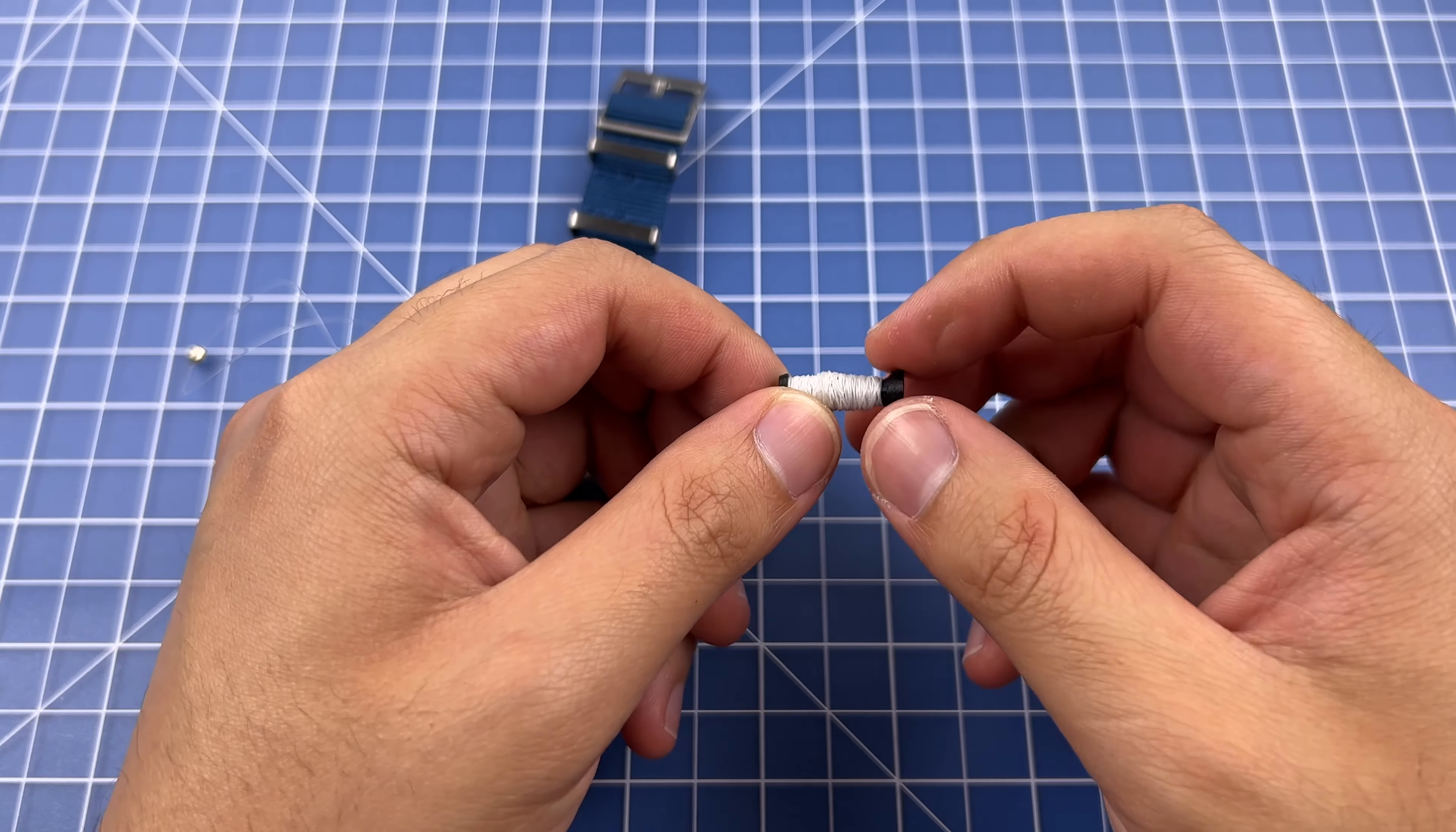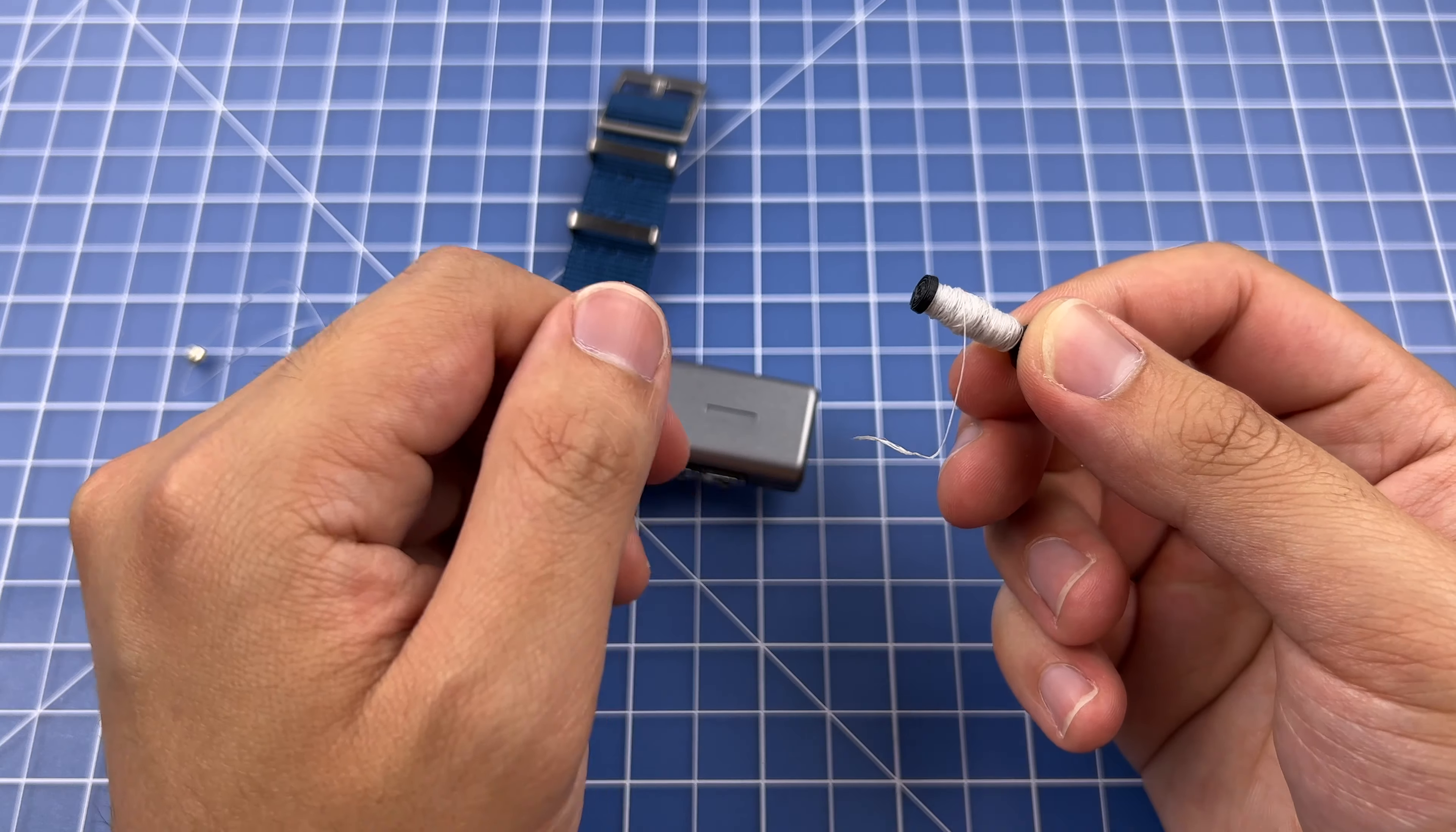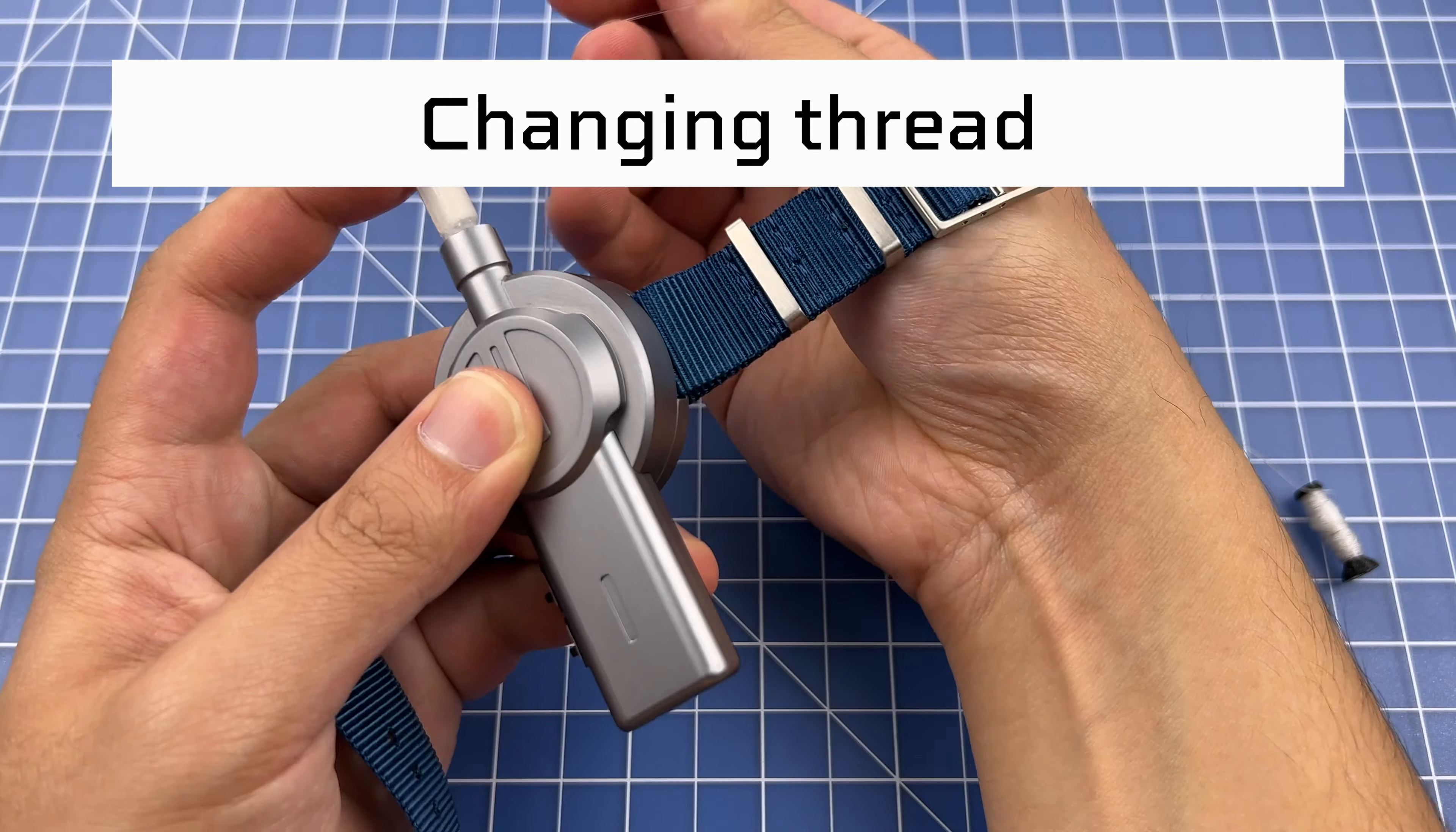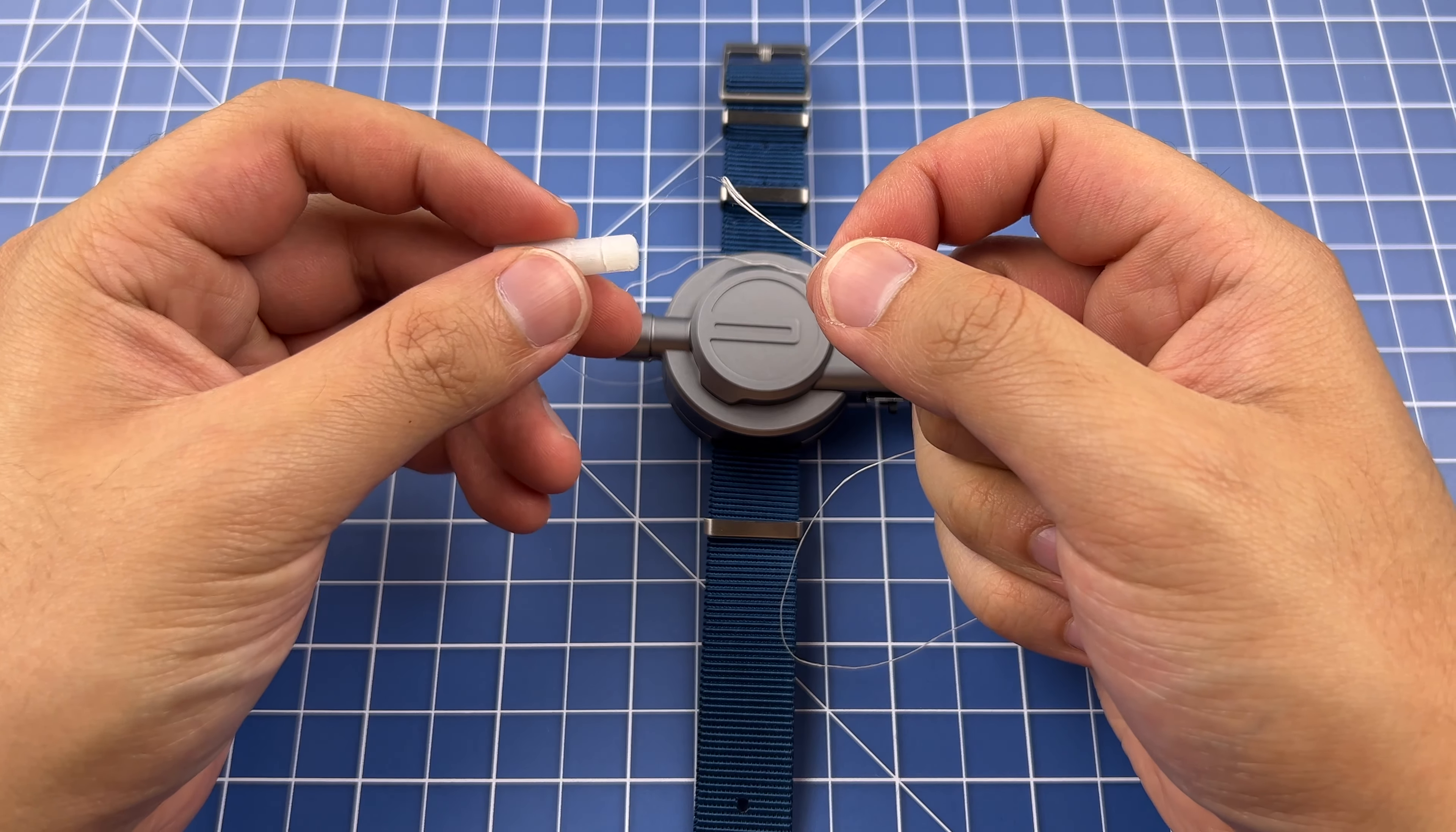In case you forget one of the reloading rules and accidentally jam or tangle the thread in a way that you can't clear manually, we supply an extra roll of thread for this purpose. We'll show you now how to change out the thread. First, disengage the Magnus and take out the thread from the projectile. Once that's done, open up the reload cartridge.